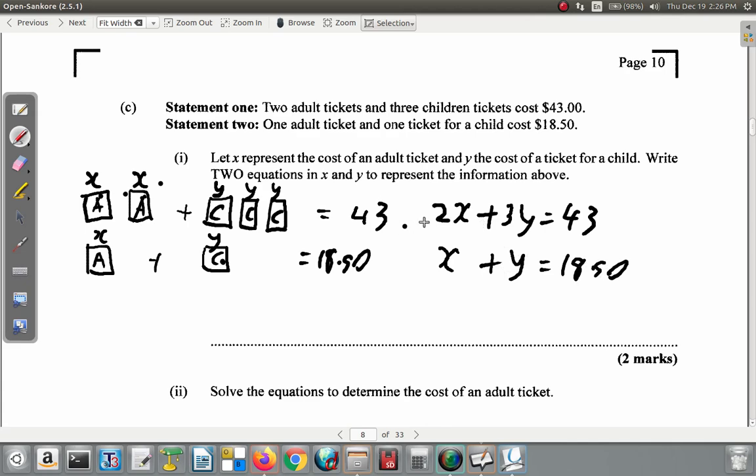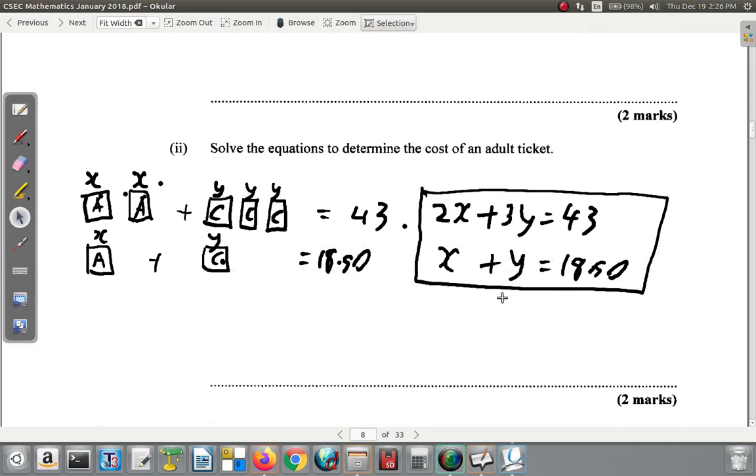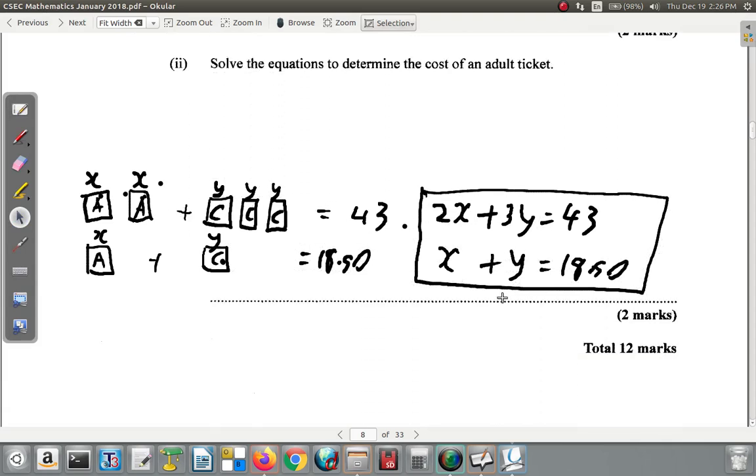So it says write two equations in X and Y to represent the information above. So you have the two equations here. Now, later on it says in part two, solve the equations to determine the cost of an adult ticket. So let's see how you're going to deal with that part of things. You're going to solve the equations.